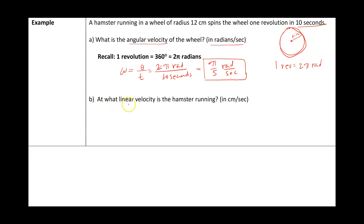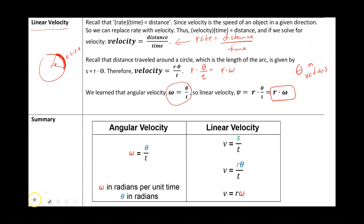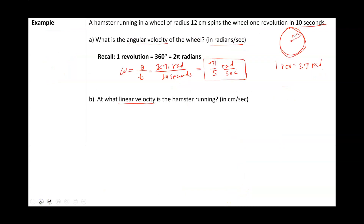At what linear velocity is the hamster running? Start with the formula: linear velocity equals r times omega. The radius is 12 and the angular velocity is pi over 5. So linear velocity equals 12 times pi over 5, which equals 12 pi over 5 centimeters per second.